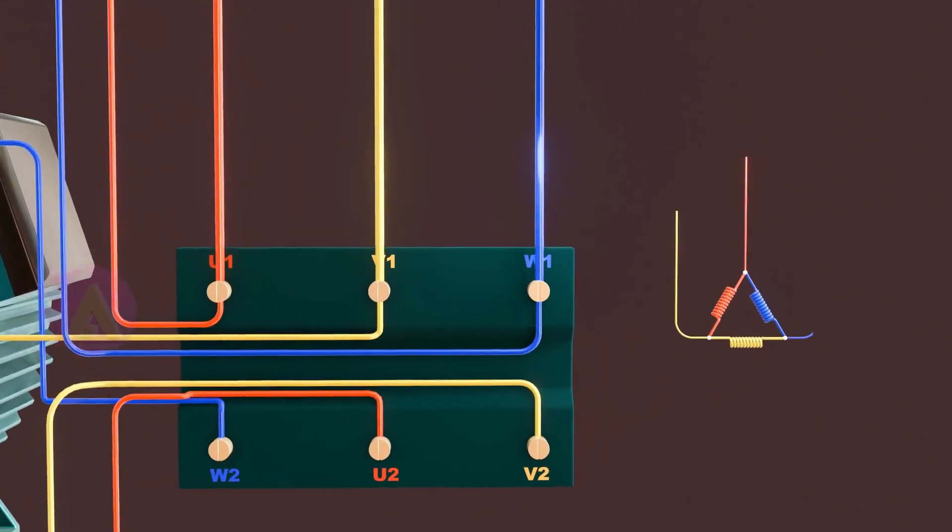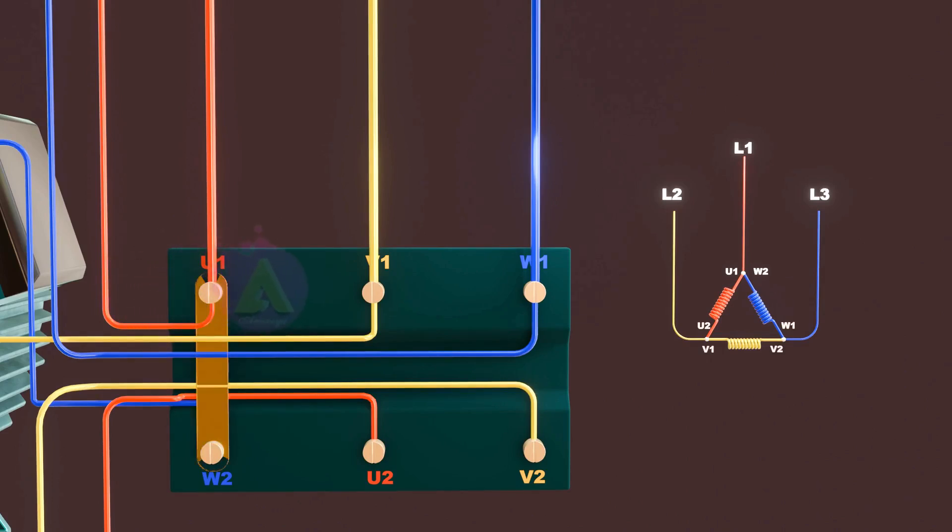The first way is delta configuration. For this we connect across the terminals U1 to W2, V1 to U2, and W1 to V2. This will give us delta configuration.